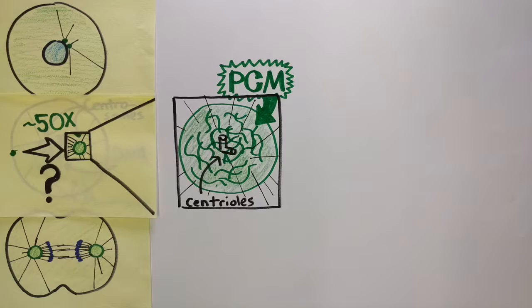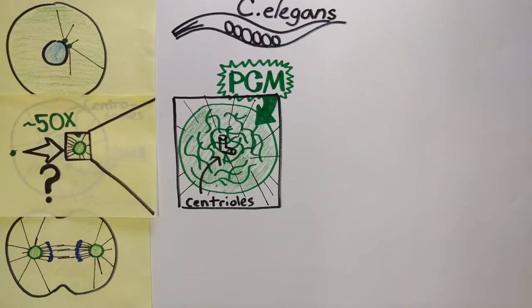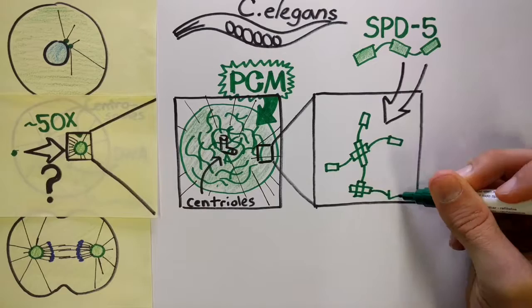Using C. elegans embryos as a model system, our lab has previously shown that the protein SPD-5 self-assembles into the underlying scaffold of the PCM. We also found that a key step in this process is the phosphorylation of SPD-5 by the polo kinase PLK-1.